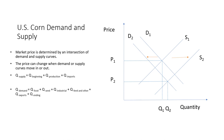The components of corn supply are beginning stocks, production, and imports, with production being the largest component. Beginning stocks are what is carried over from the previous year. Large stocks can provide additional supplies in a low production year, while small stocks provide less. Production is determined by the amount of acreage harvested and the yield per acre. The U.S. hardly imports any corn — in the 2020-21 marketing year, the U.S. imported only 0.2 percent of its total supply.